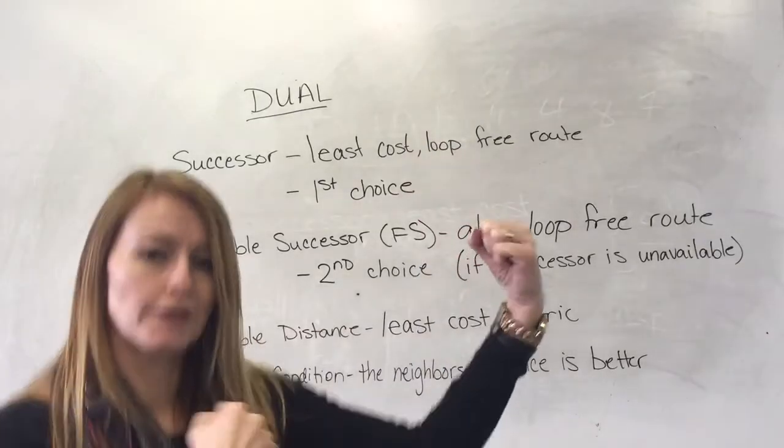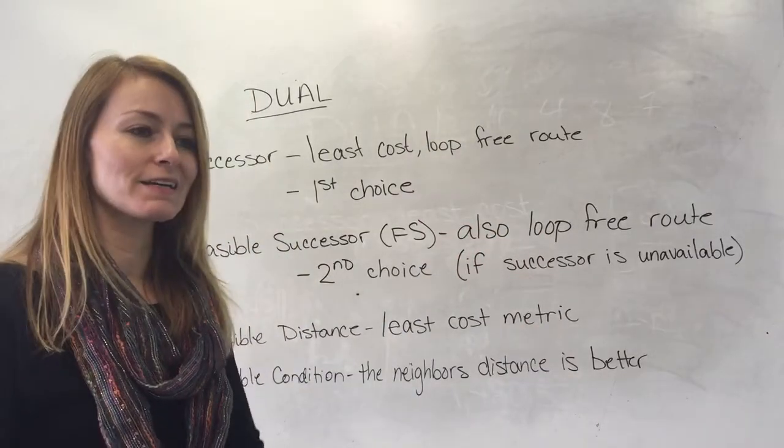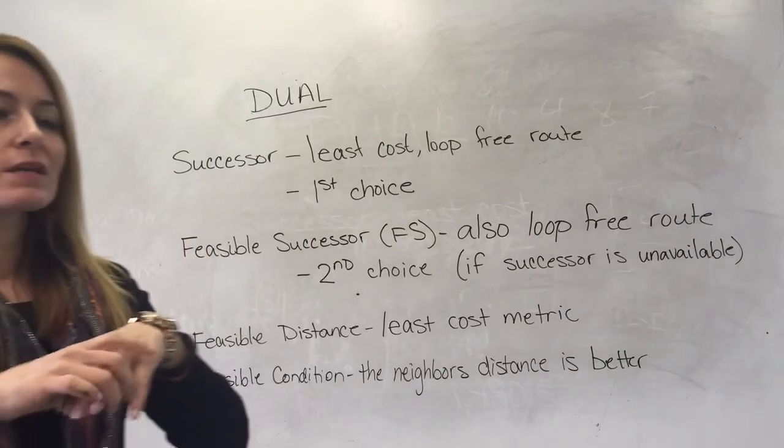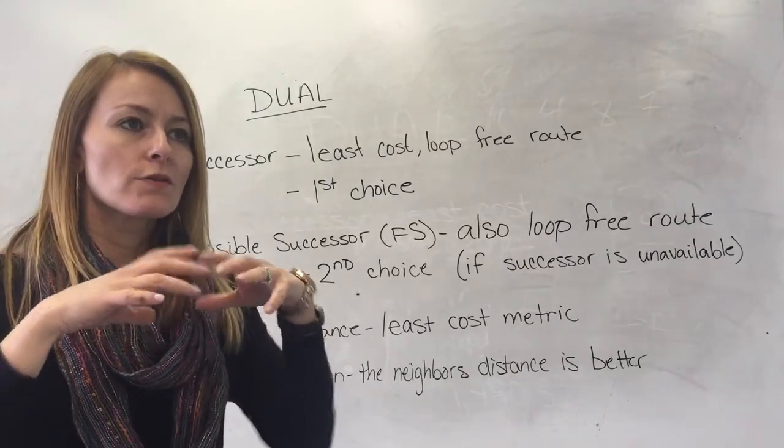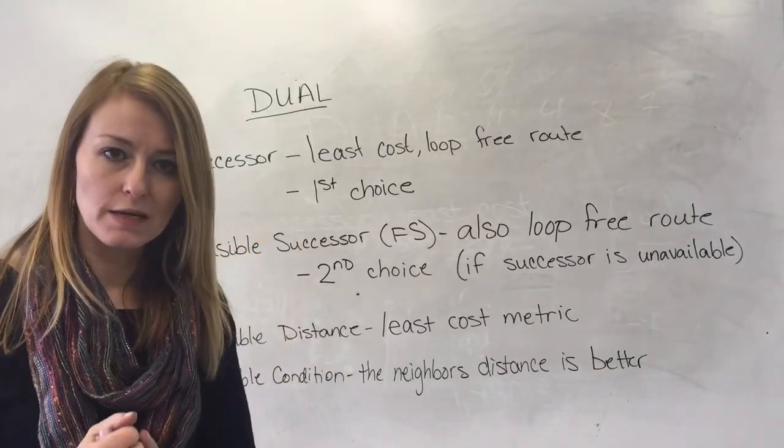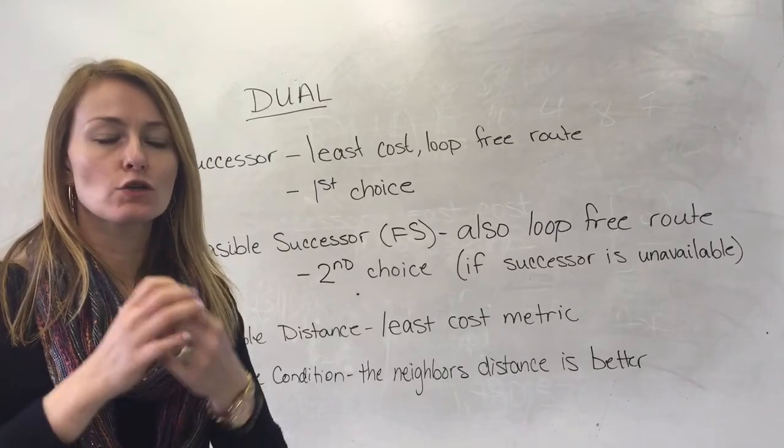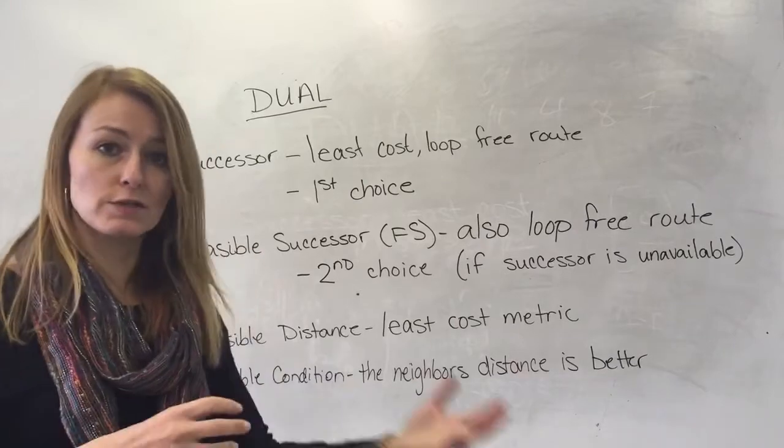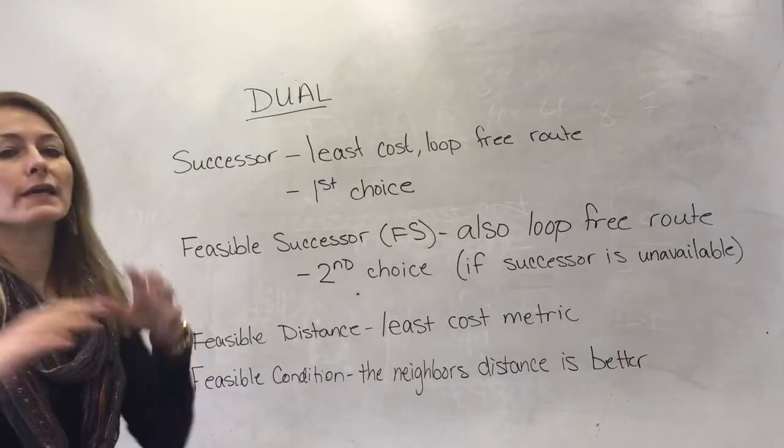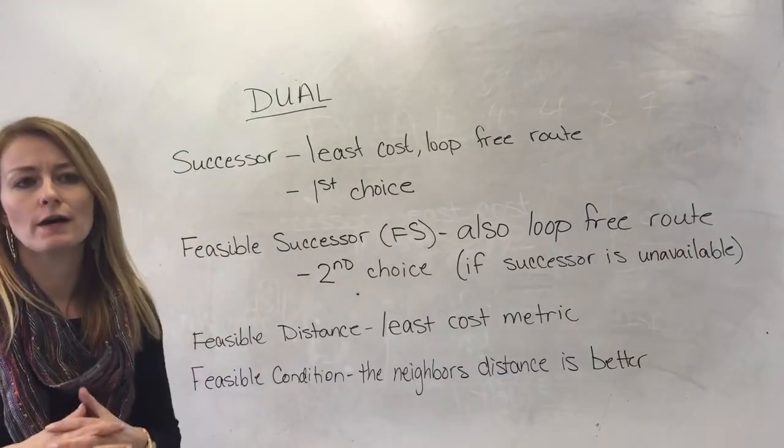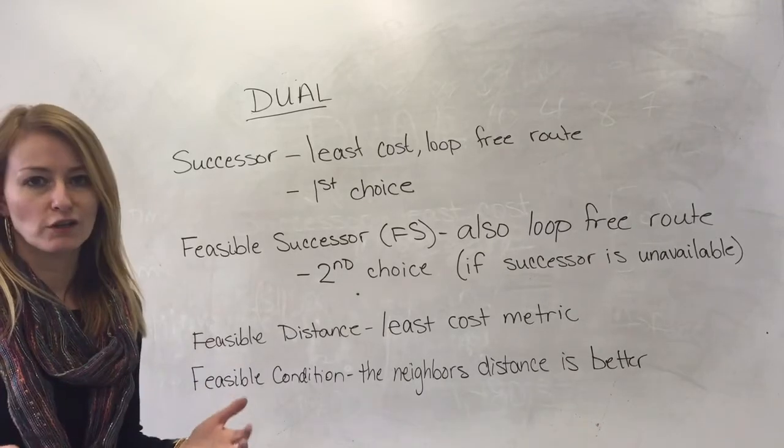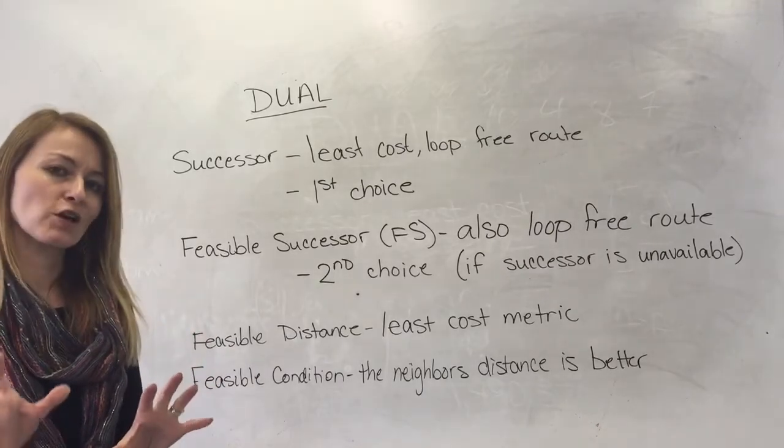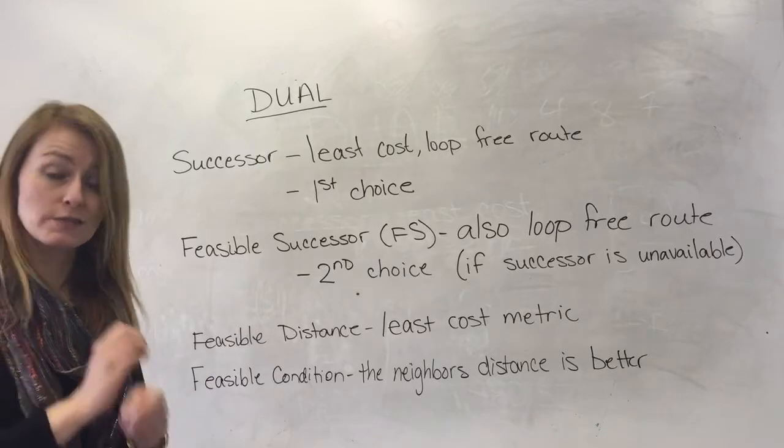DUAL on guard! Alright, DUAL is the way that EIGRP finds its shortest loop-free paths from the routers to the destination. It's really just a bunch of terminology, so let's learn the terminology that's required to understand DUAL.